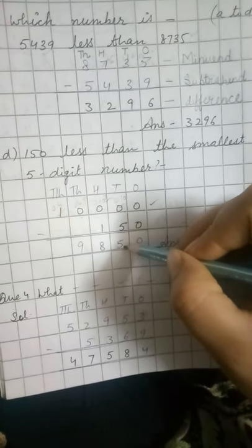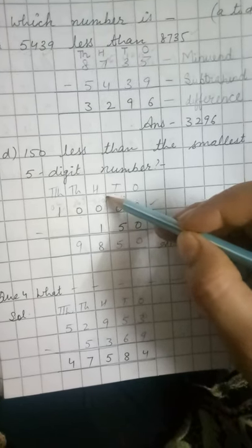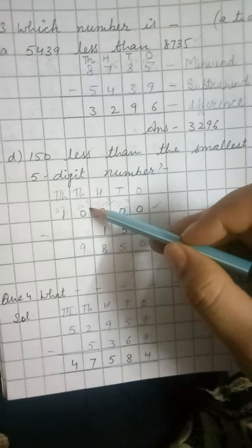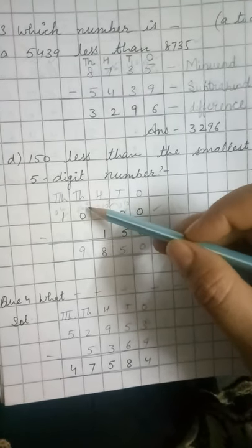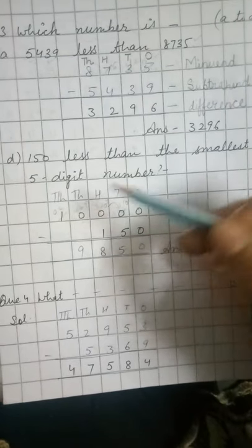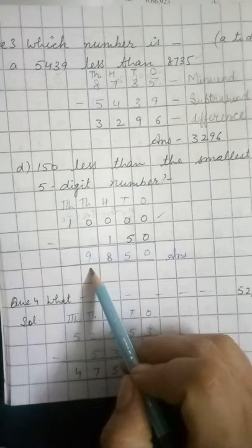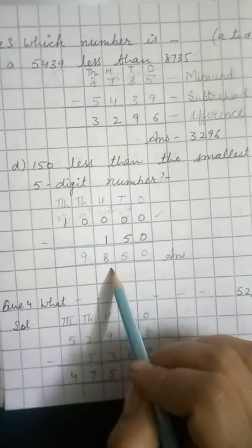10 minus 5 will be 5. Here 9 remained. 9 minus 1 is 8. Again, here also 9 remained because we borrowed from here. 9. Nothing is subtracted from 9, then it is 9. So the difference is 9,850.